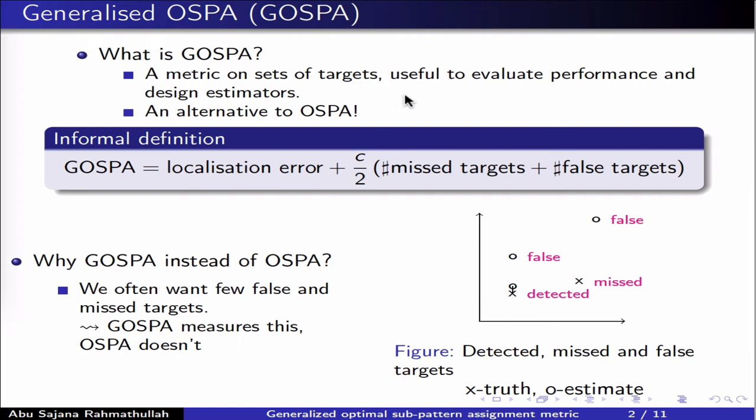Currently the most important and commonly used metric to evaluate tracking performance is OSPA, and GASPA can be viewed as a new alternative to using OSPA. For those who are not already familiar with OSPA, it may be good to explain the problem formulation in more detail, and we can use a toy example to do so.